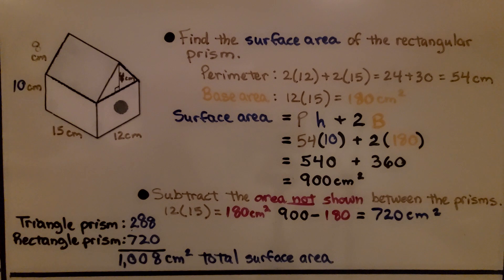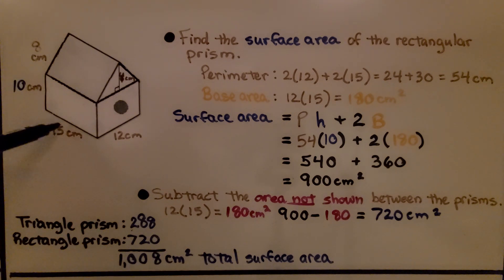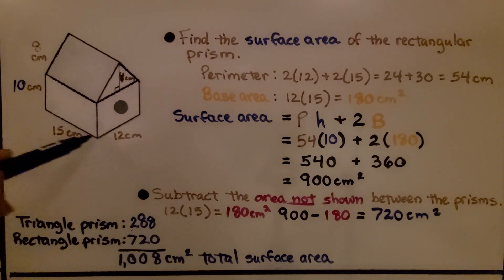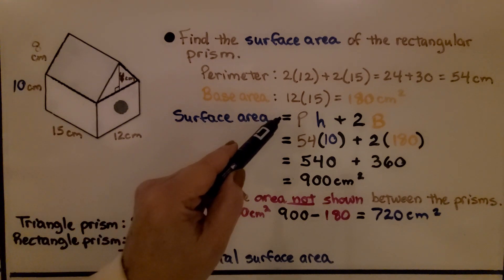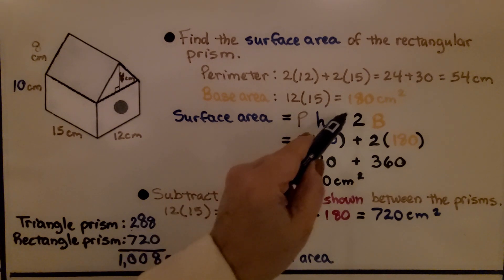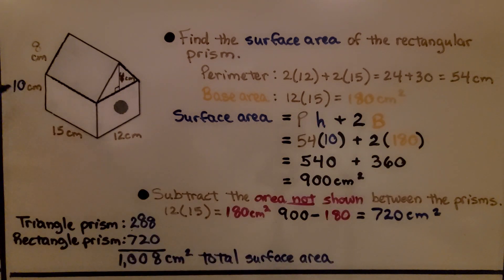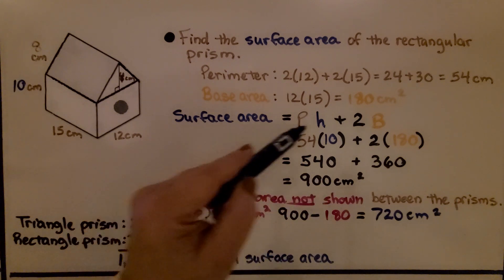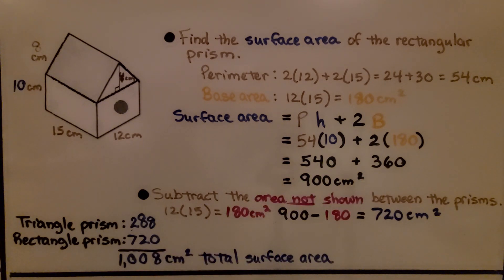Now we find the surface area of the rectangular prism. The perimeter of the base is 2 × 12 + 2 × 15 = 24 + 30 = 54 cm. The base area is 180 cm². Using s = ph + 2b: 54 × 10 + 2 × 180 = 540 + 360 = 900 cm².